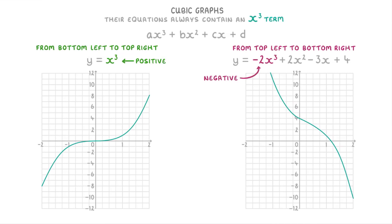One way to remember this is that if you draw them from left to right, positive cubic graphs go up because they're positive, and negative cubic graphs go down because they're negative.